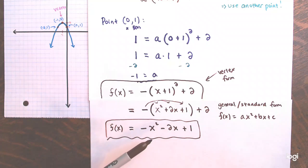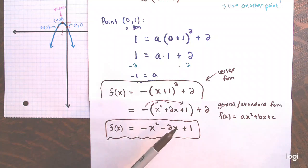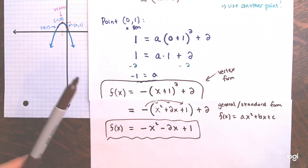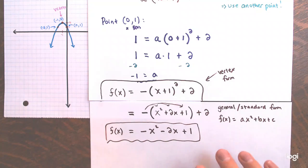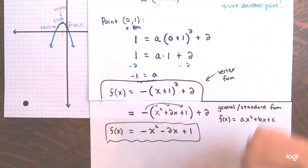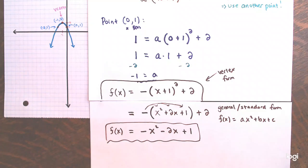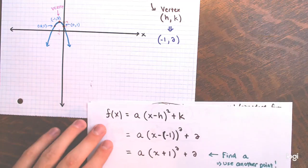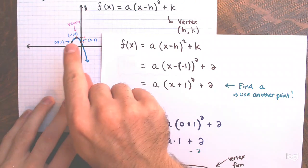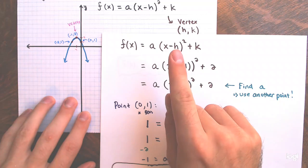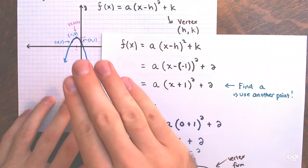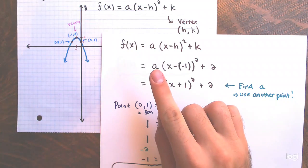Double check: when x is 0 is the output 1? Yes. When x is −1 is the output 2? Yes. When x is −2 is the output 1? Yes. These two equations — the vertex form and the standard form — are the same equation; they just look different. They represent the same parabola, the same quadratic function. So if you're given a graph of a parabola and you know the vertex and some other point, you can write the equation in vertex form quickly: use the vertex for h and k, then use the other point to find a.